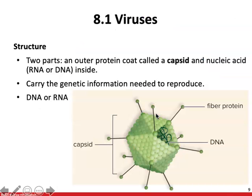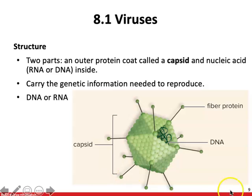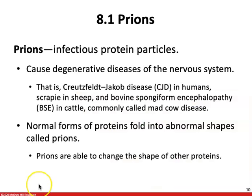A virus has two parts: the capsid — a protein outer shell — and the DNA housed inside. Portions of the virus bind to receptors on the host cell's surface. Once attached, its DNA or RNA enters the cell and codes for the proteins that form the capsid. It replicates its DNA, fills the new capsids, and releases them to infect more cells. Finally, prions are infectious protein particles — normal proteins folded into abnormal shapes — that can cause degenerative diseases of the nervous system and spread by converting other proteins to the same misfolded shape.